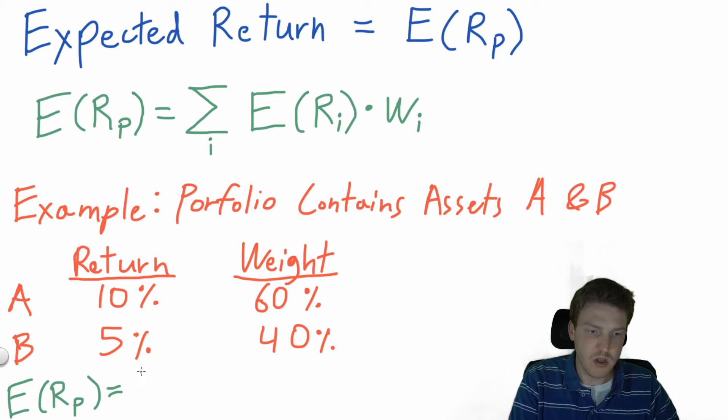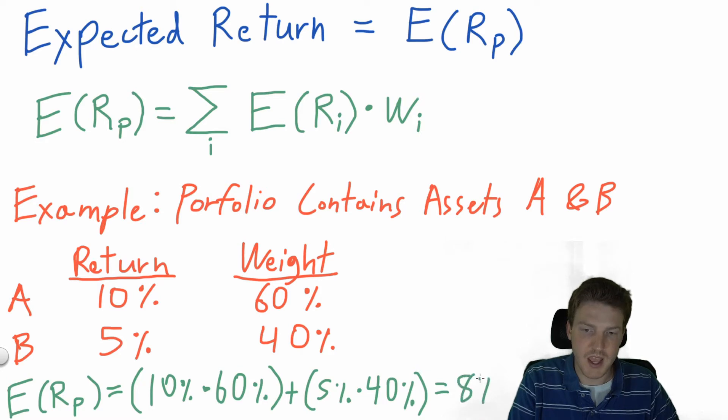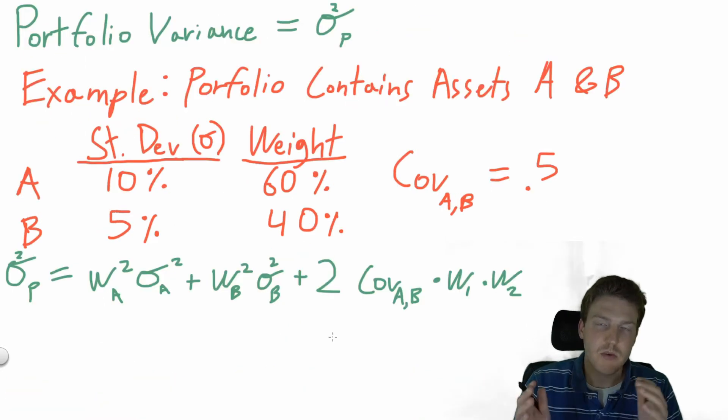So to calculate the expected return on this portfolio, we'll just take the 10% expected return of asset A, multiply it by its weight of 60%, and then add the 5% expected return of asset B and multiply it by its weight of 40%. And we'll get a total portfolio expected return of 8%.